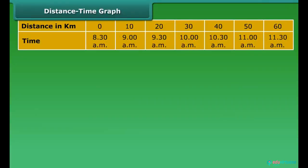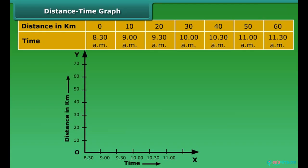Motion of objects can be presented in pictorial form with the help of distance-time graph. For this purpose, first draw a horizontal line to represent the x-axis and a vertical line to represent the y-axis and mark them as OX and OY.